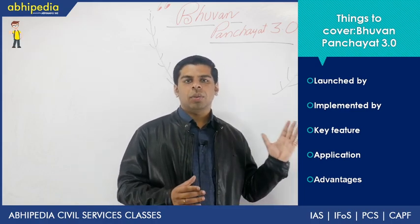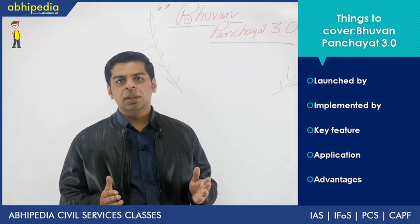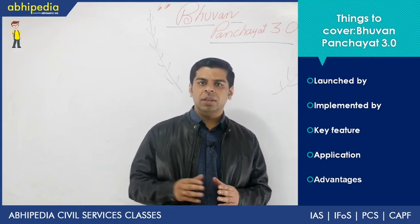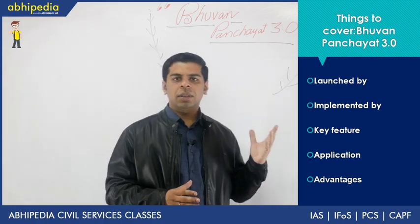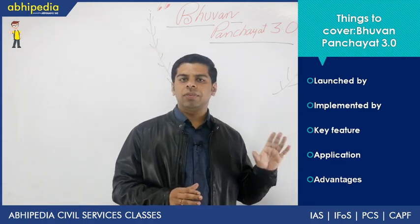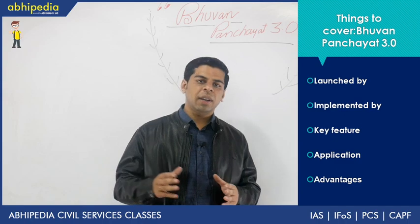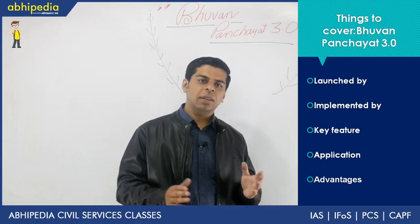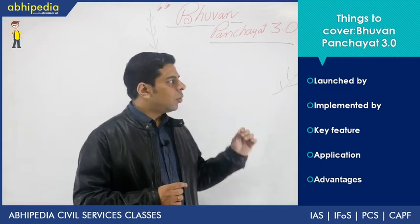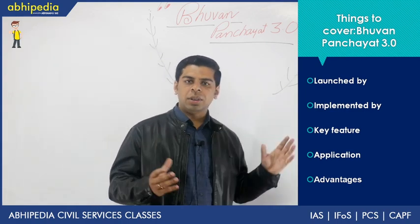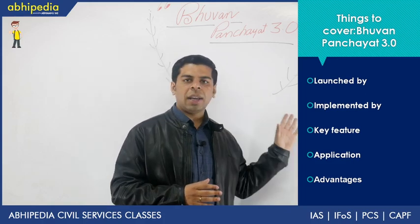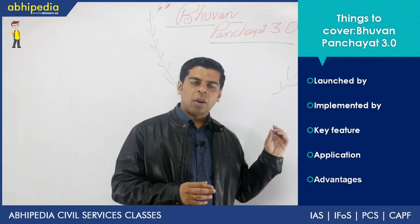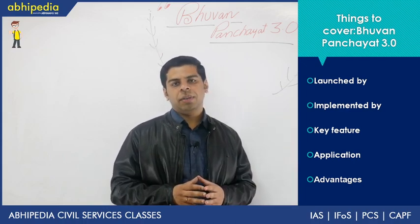Now, what are the key features that make this Bhuvan a quite different project from the earlier ones? First, the number of parameters has been increased — there are 47 different parameters. This is a geo-information based web portal that will provide a plethora of services for decentralized planning. The duration of this third version is two years, after which an upgraded version will take over. Importantly, for the first time, earth observation satellites of higher resolution are being used, with thematic-based information at a scale of 1:2000.